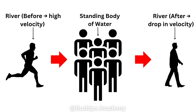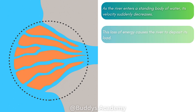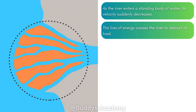The answer is that you will need to slow down in order to pass — and that's the exact same thing as a river. Once your river is moving and it enters your standing body of water — remember, a standing body of water is water that's not really moving — the river is going to slow down very quickly. Its velocity is going to suddenly decrease, and this loss of energy is then going to cause the river to deposit its load.